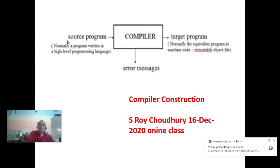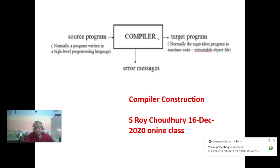The most interesting thing is the source program and the target program, which can be run on any target machine or on a virtual machine like Python virtual machine or Java virtual machine. Inside the compiler, this single box contains lots of technologies — most advanced computer science techniques from machine learning, artificial intelligence, data structures, dynamic programming — you name it, you will get it. This is the most sophisticated system, other than operating systems. A lot of technologies can be learned and applied elsewhere.